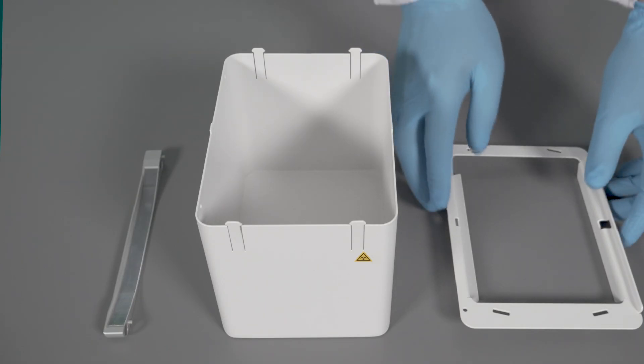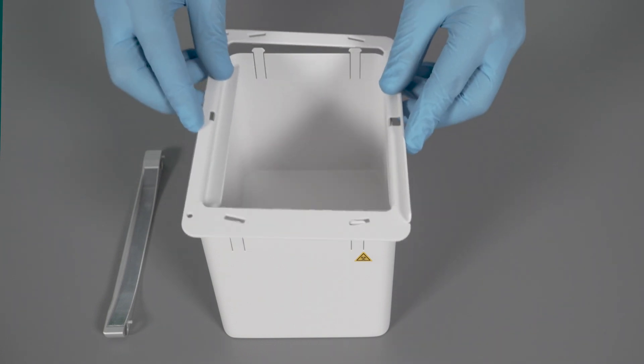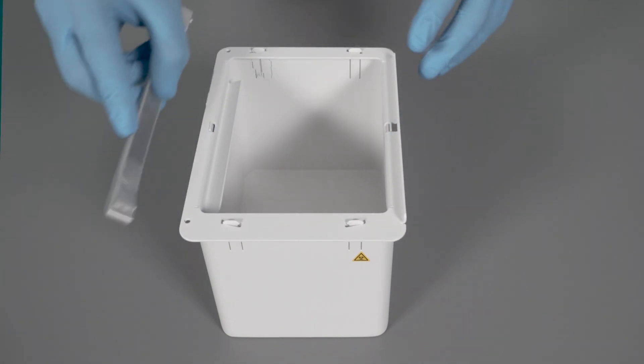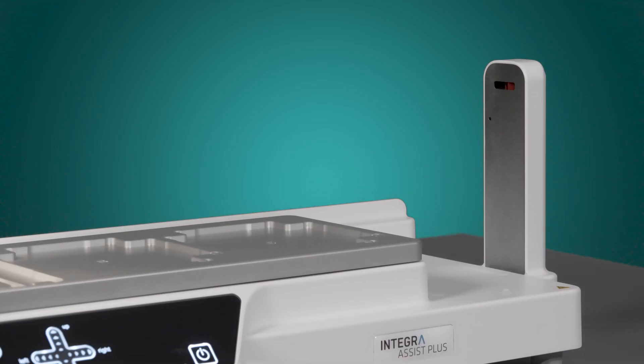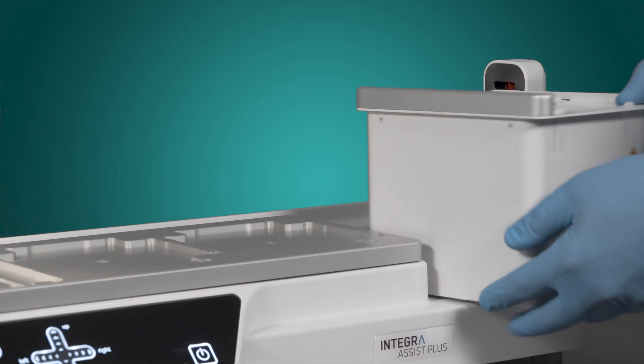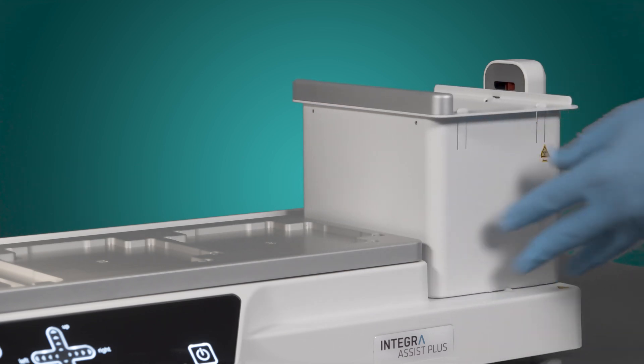Finally, assemble the waste of the Assist Plus. Therefore, take the waste bin, mount the frame and the sensor reflector on top. Place the waste bin on the right side of the Assist Plus with the ejector latch and the sensor reflector facing the tip sensor on the right side.